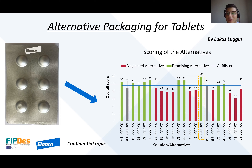So you might think: why change anything if they are so perfect? But actually, during a consumer survey, it was found that blisters are not really convenient for the consumer and they are also hard to open. On the other side, they are not perfect from an environmental point of view, because they cannot be recycled and often contain harmful substances. And since their invention in the 1960s, they have not gone through any bigger change — so most probably your grandparents struggled already with the same things as you are doing today.